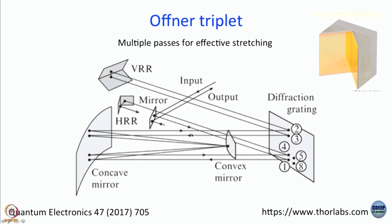The good thing about retro reflectors is that the incoming and outgoing beams are parallel to each other - opposite direction but parallel. It comes back and hits the diffraction grating at point number three, goes to the concave mirror, from concave mirror to convex mirror, then back to the concave mirror. From there it goes to the horizontal retro reflector and then it goes out. What is the need for such a complicated arrangement?